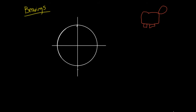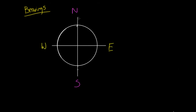When we look at compasses, we know that we've got a couple of directional points. The first directional point is north, then we've got south, then east, and then west. The way I was always taught to remember this is: Never Eat Soggy Wheat Bix. If you're not from Australia you might not know what Wheat Bix are — it's a type of breakfast cereal. But yeah: north, east, south and west.